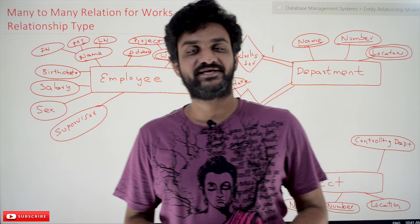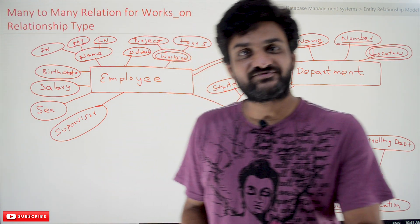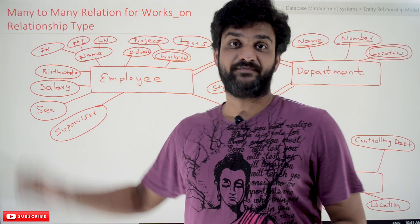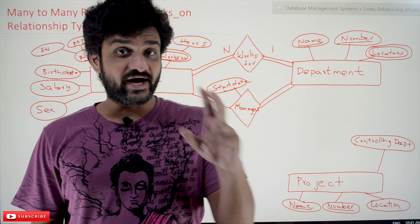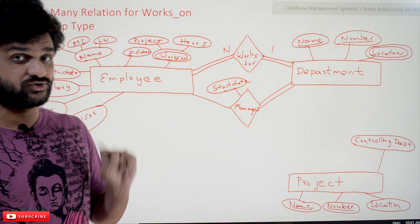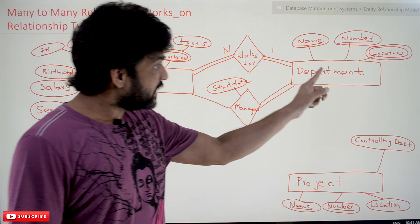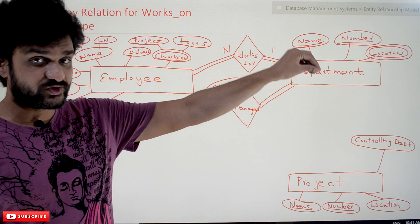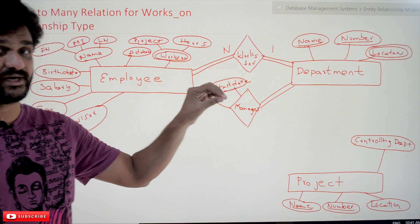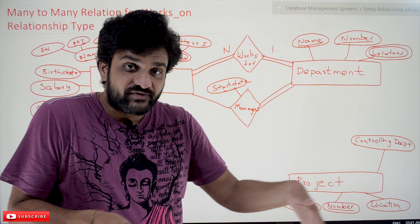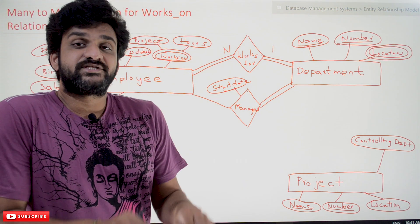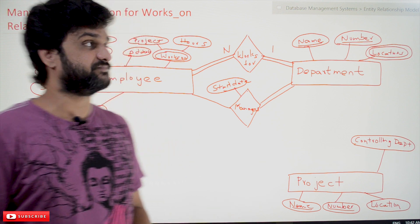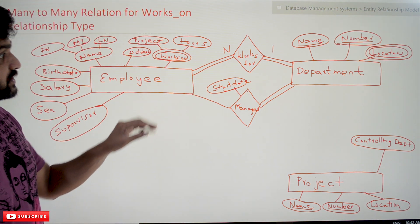Hi, welcome to Learning Monkey. I am Vikram. In this class we try to understand a many-to-many relationship for the 'works on' relationship type. So far in our previous classes we have identified two different relationship types between employee and department. If you haven't watched those videos, please watch them and come back. The link for the playlist is provided in the description below.